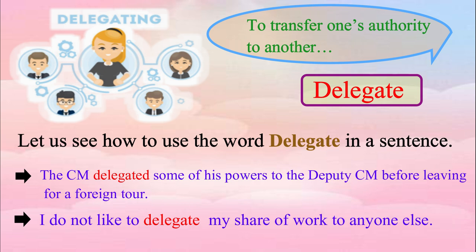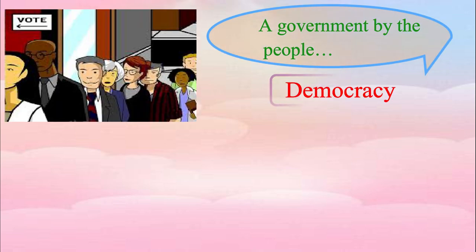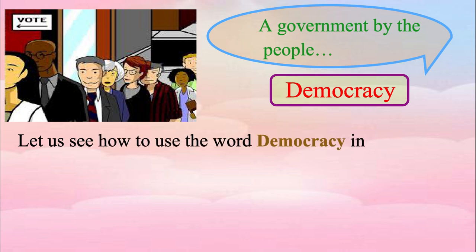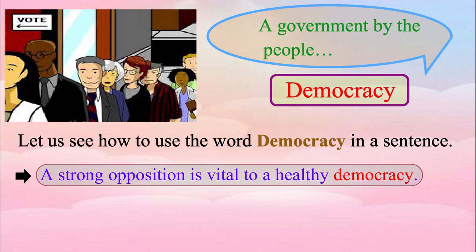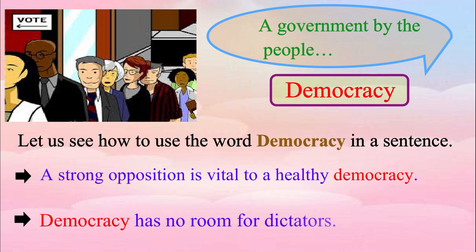Let us see the next expression: a government by the people — or we can simply say democracy. Democracy is a form of government in which the supreme power is vested in the people and exercised directly by them or by their elected representatives under a free electoral system. Please repeat after me: A strong opposition is vital to a healthy democracy. Democracy has no room for dictators.